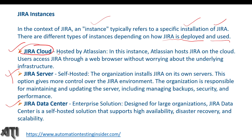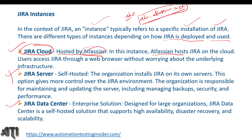If we talk about Jira Cloud, it is hosted by Atlassian — the company which developed Jira software, an Australian company we discussed in the last video. In this instance, Atlassian hosts Jira on the cloud; users access it through a web browser without worrying about the underlying infrastructure. Atlassian sets up the site, domain, and hosting, and we provide our subdomain. For example, if we are working for a company called ABC, our site will be like abc.atlassian.net.